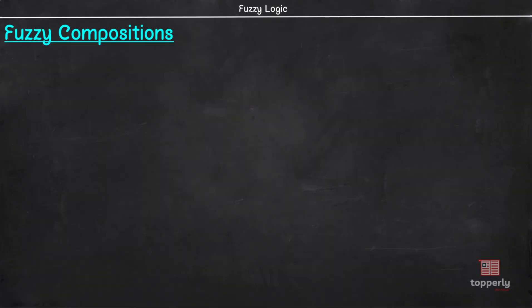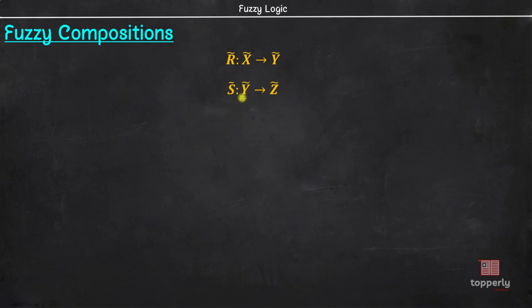Fuzzy Compositions are defined the same way as they are defined for crisp compositions, which we learned in lecture 5. Suppose R is a fuzzy relation from Universe X to Universe Y, and S is a fuzzy relation from Universe Y to Universe Z, then R Composition S is a relation from Universe X to Universe Z.